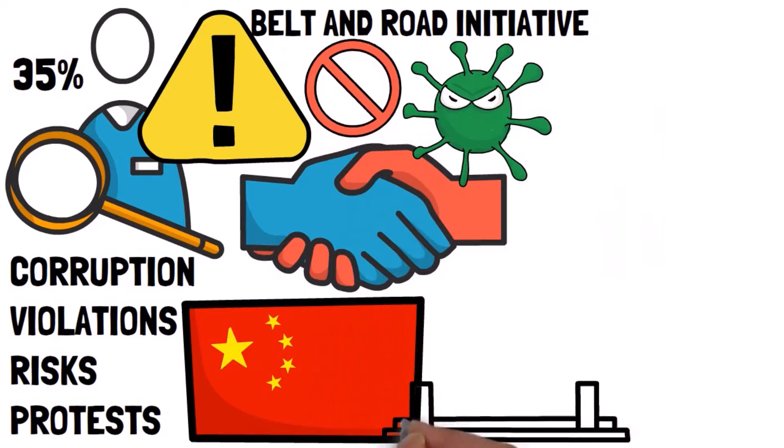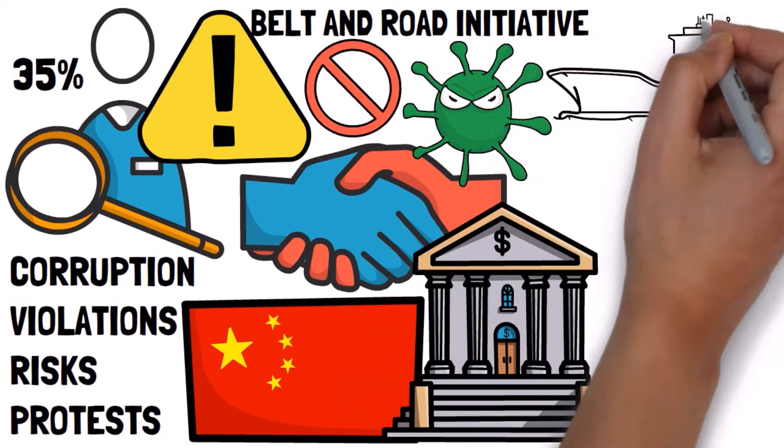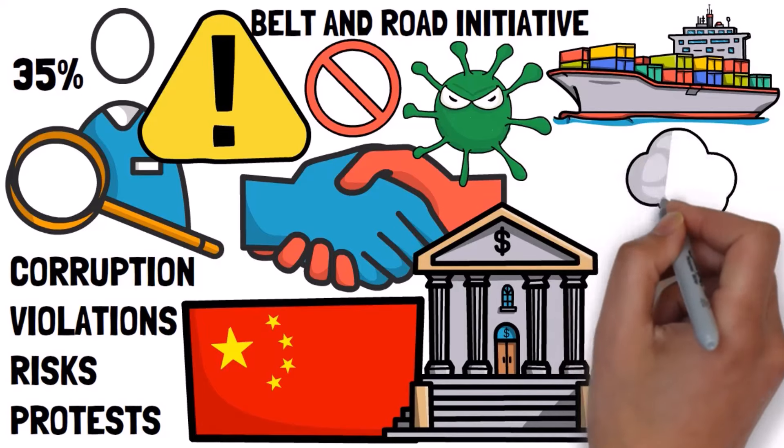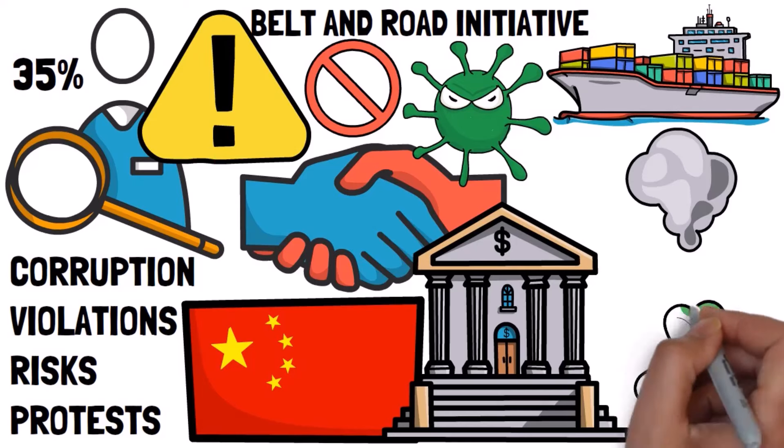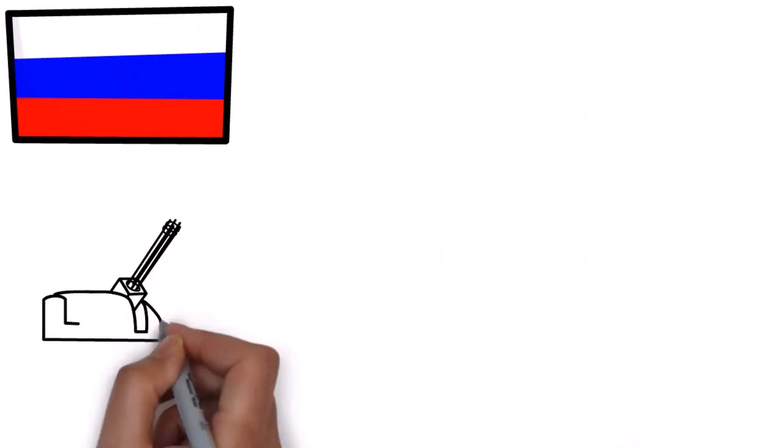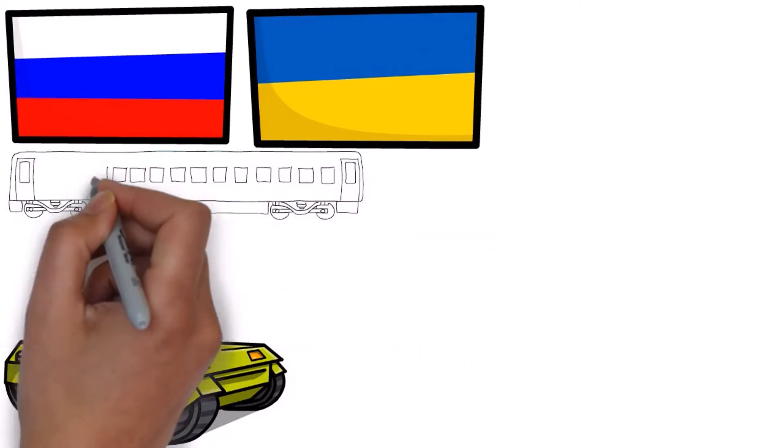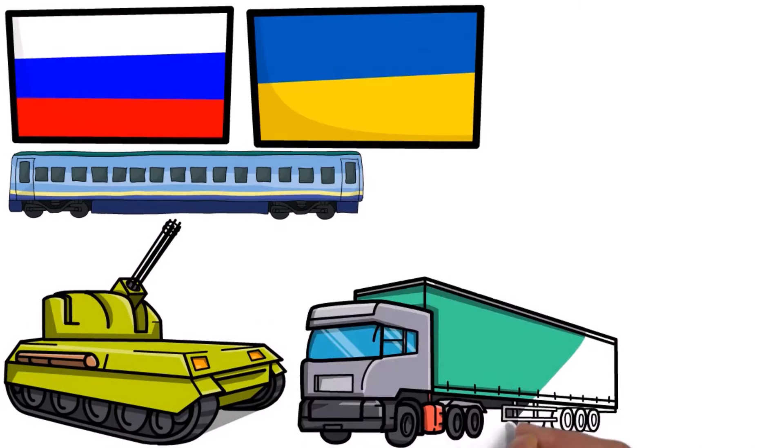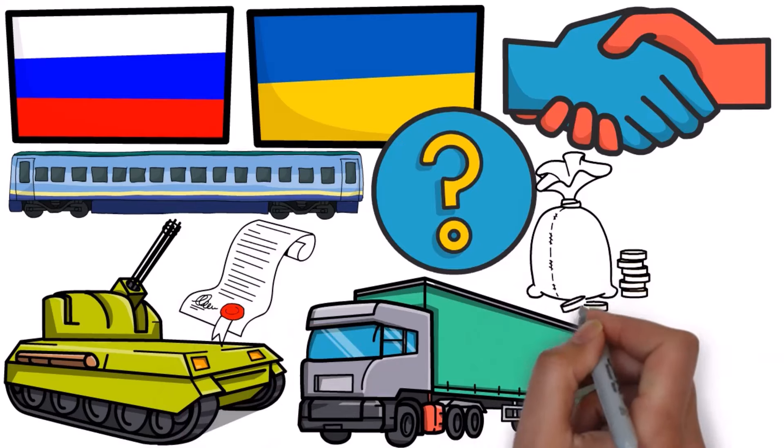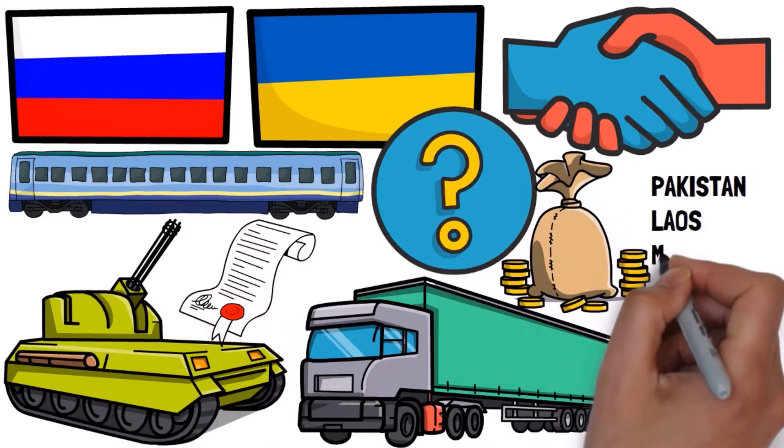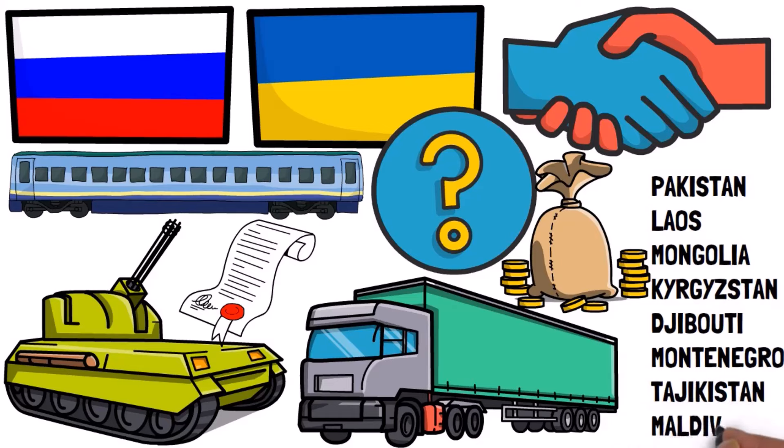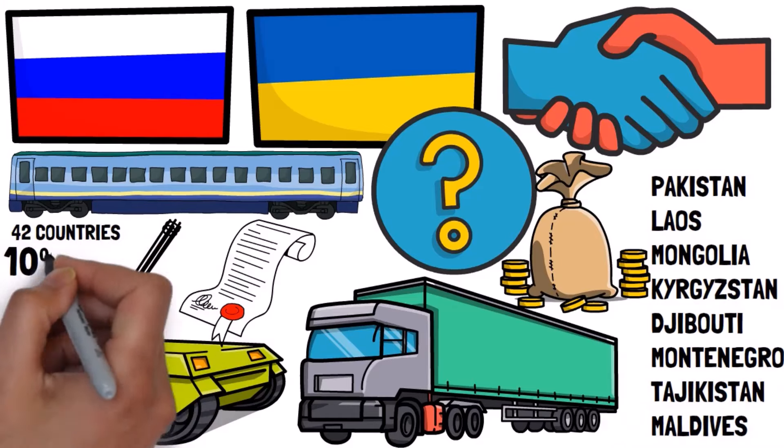The COVID-19 pandemic worsened the situation by increasing debt and impacting China's economy due to reduced exports. The Belt and Road Initiative also faced criticism for its carbon emissions, pressuring China to make it more environmentally friendly, despite its heavy reliance on fossil fuels. Additionally, Russia's Ukraine invasion disrupted vital train routes, causing supply chain issues. This, along with questionable project choices, hasty deals and Chinese company contracts, left many developing countries with massive debts, including Pakistan, Laos, Mongolia, Kyrgyzstan, Djibouti, Montenegro, Tajikistan and the Maldives, totaling 42 countries owing China over 10 percent of their GDP.